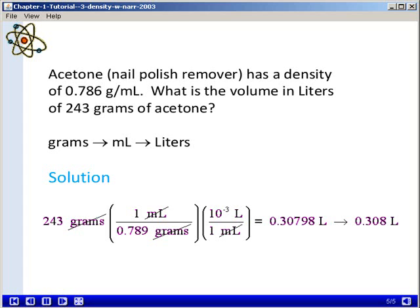When we perform the following mathematical operation, we get a calculator answer of 0.30798 liters. Taking into account the rules for significant figures, we round our answer to 0.308 liters.